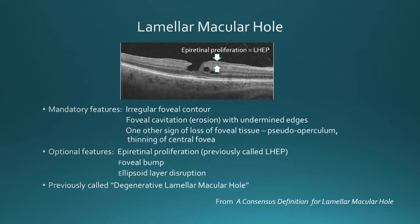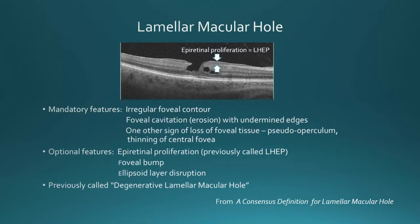Lamellar macular hole, on the other hand, is defined by an irregular foveal contour. There is foveal cavitation or erosion with undermined edges around the edges of the hole, and one other sign of foveal tissue, such as a pseudoperculation or thinning of the central foveal area. The optional features are the epiretinal proliferation, which was previously called lamellar macular hole epiretinal proliferation, with a characteristic medium to isoreflective nature that is usually thickened.